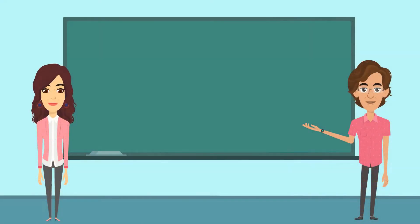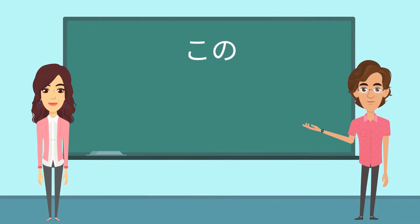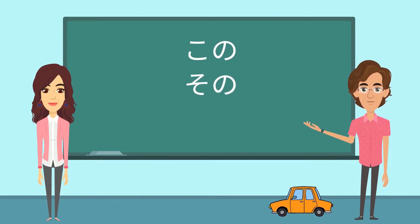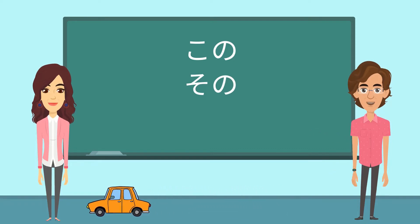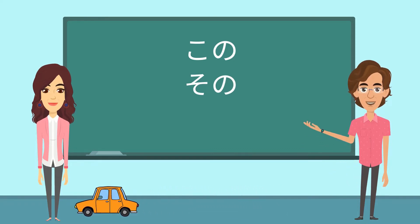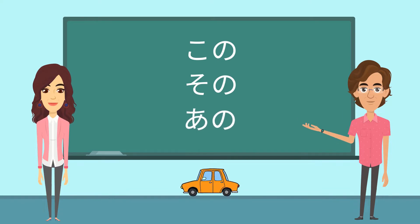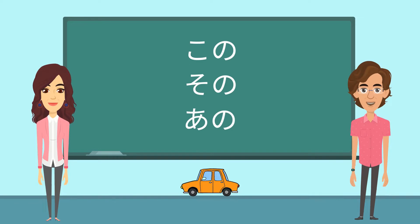In today's lesson, we learn how to use KONO, SONO, and ANO. KONO is used when we talk about something close to the person speaking. SONO is used when we talk about something close to the person listening. And ANO is used when the thing is far from both the speaker and the listener.